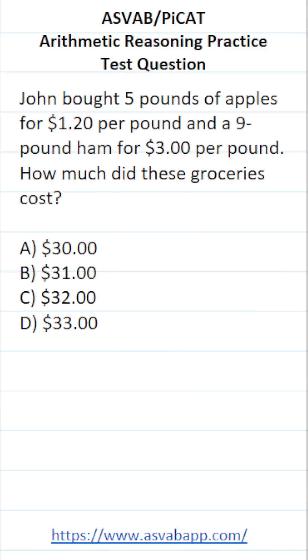This arithmetic reasoning practice test question for the ASVAB and PiCAT says: John bought five pounds of apples for $1.20 per pound and a nine-pound ham for $3 per pound. How much did these groceries cost?